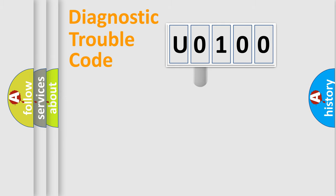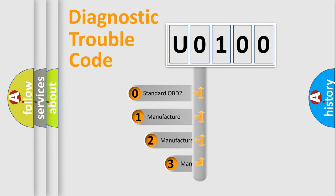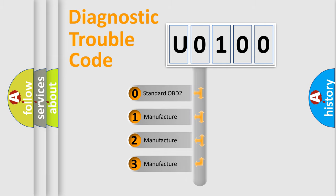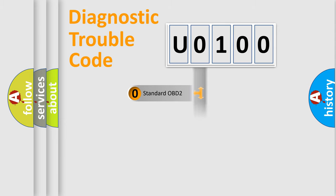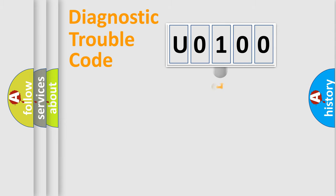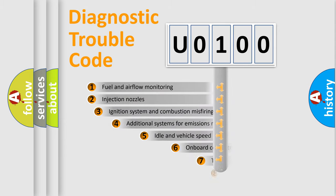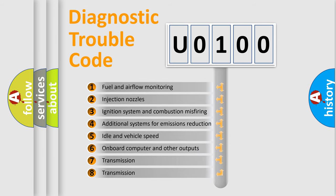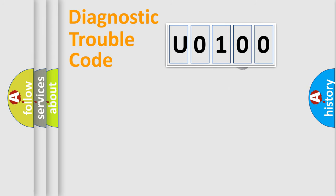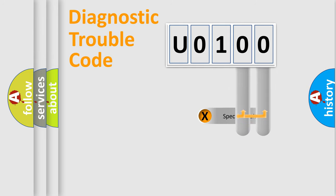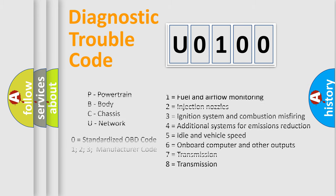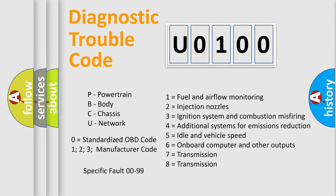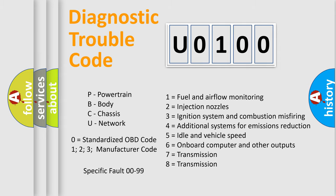This distribution is defined in the first character of the code. If the second character is expressed as zero, it is a standardized error. In the case of numbers 1, 2, or 3, it is a manufacturer-specific error. The third character specifies a subset of errors. This distribution is valid only for the standardized DTC code, and only the last two characters define the specific fault of the group.